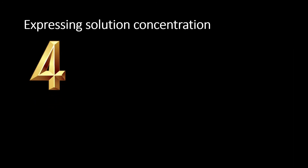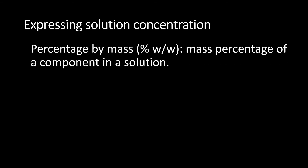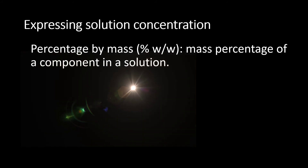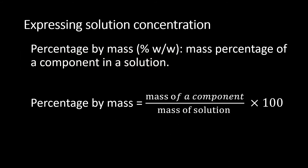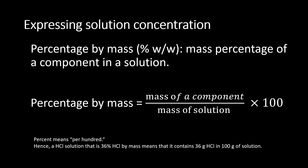The fourth way to express solution concentration is percentage by mass. Percentage by mass is defined as the mass percentage of a component in a solution. The formula is: percentage by mass equals the mass of a component over the mass of the solution, multiplied by 100. For example, if you have an HCl solution stated as 36% HCl by mass, it means that in 100 grams of solution, 36 grams is HCl solute.